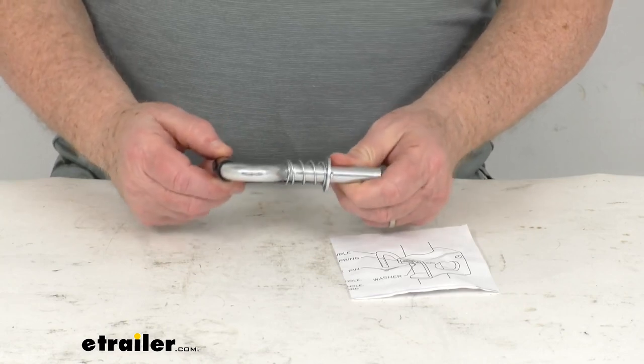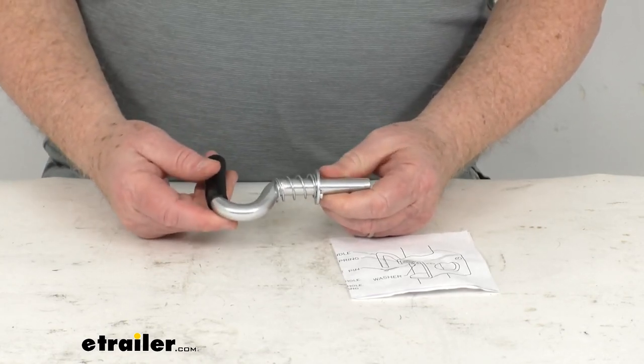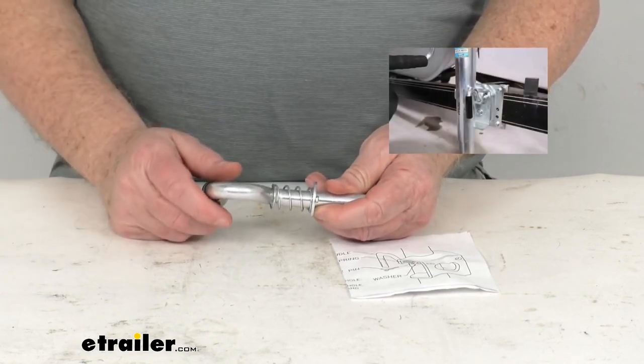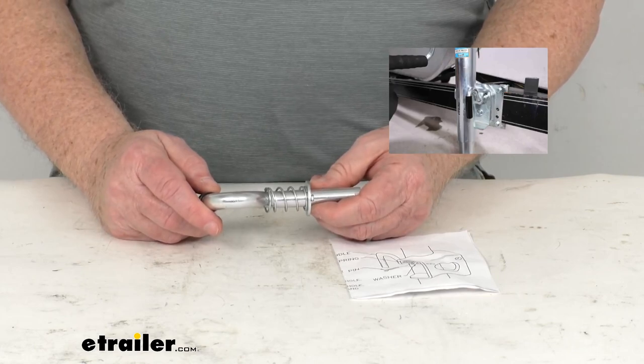Basically what this is, is a spring-loaded pull pin that's on the trailer jack. Just want to pop up an insert to show you where it's located. If you look at that insert, you'll see that pull pin right there.